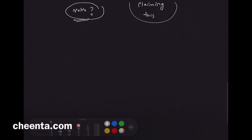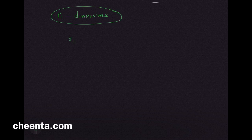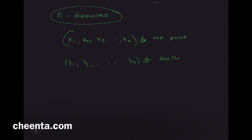Before ending, let me extend this to n dimensions. The n-dimensional Cauchy-Schwarz inequality applies to two points: (x1, x2, ..., xn) and (y1, y2, ..., yn), both in n-dimensional space. The inequality says simply: dot product ≤ product of distances.